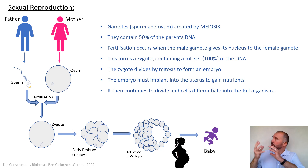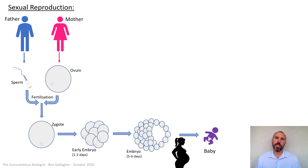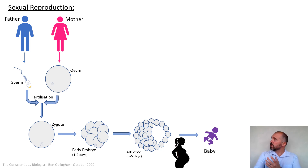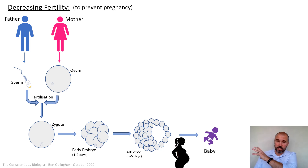How can we manipulate and change everything in this diagram to try and increase the chances of pregnancy or decrease them? A lot of the time the manipulation that humans want to do with fertility is to reduce their chances of pregnancy so they don't get pregnant when they don't want to be. We're going to look at this a stage at a time to see how you can disrupt the normal reproductive mechanisms.